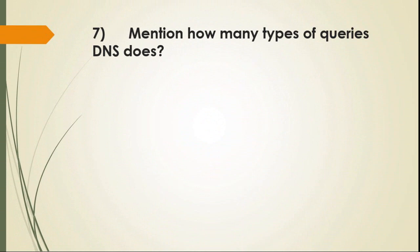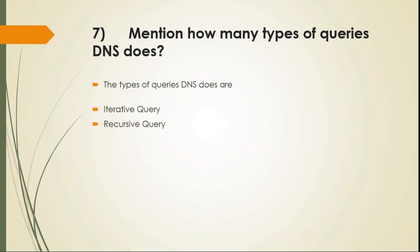Question 7: Mention how many types of queries DNS does. The types of queries DNS does are: Iterative Query and Recursive Query.